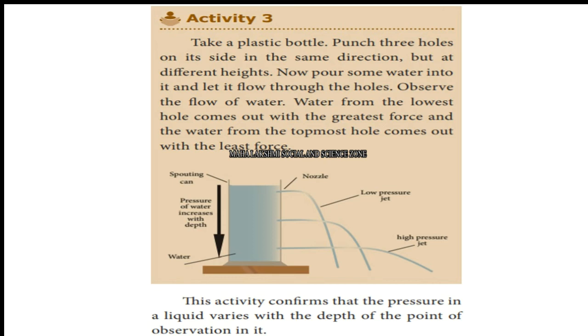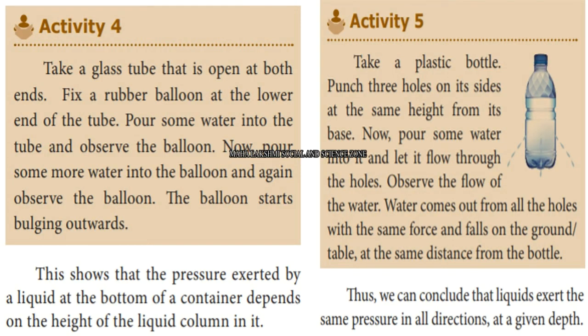Activity 4: Take a glass tube open at both ends and fix a rubber balloon at the lower end of the tube. Pour some water into the tube and observe the balloon. As more water is added, the balloon bulges outward. This shows that the pressure exerted by a liquid at the bottom depends on the height of the liquid column.